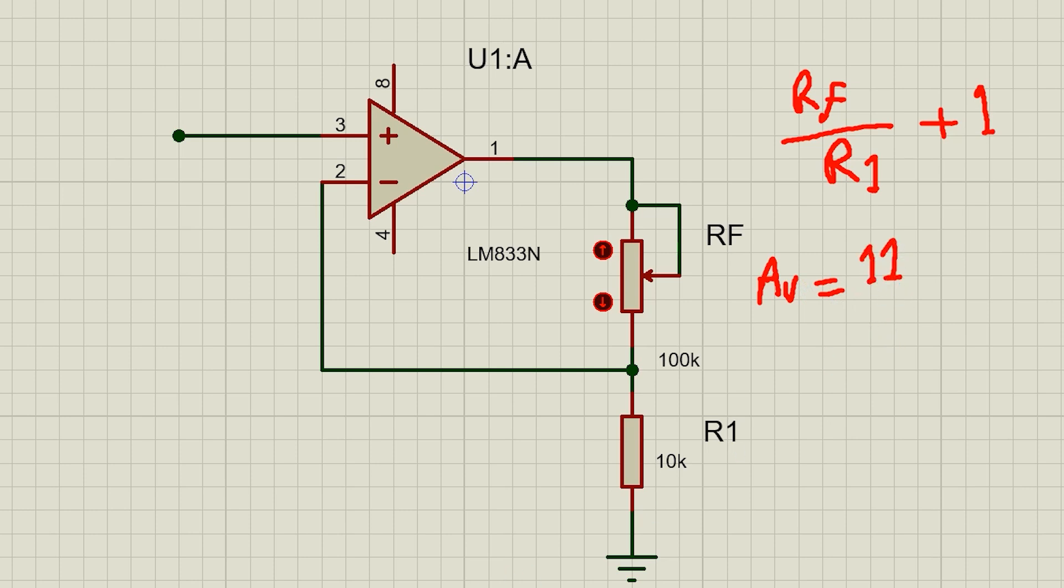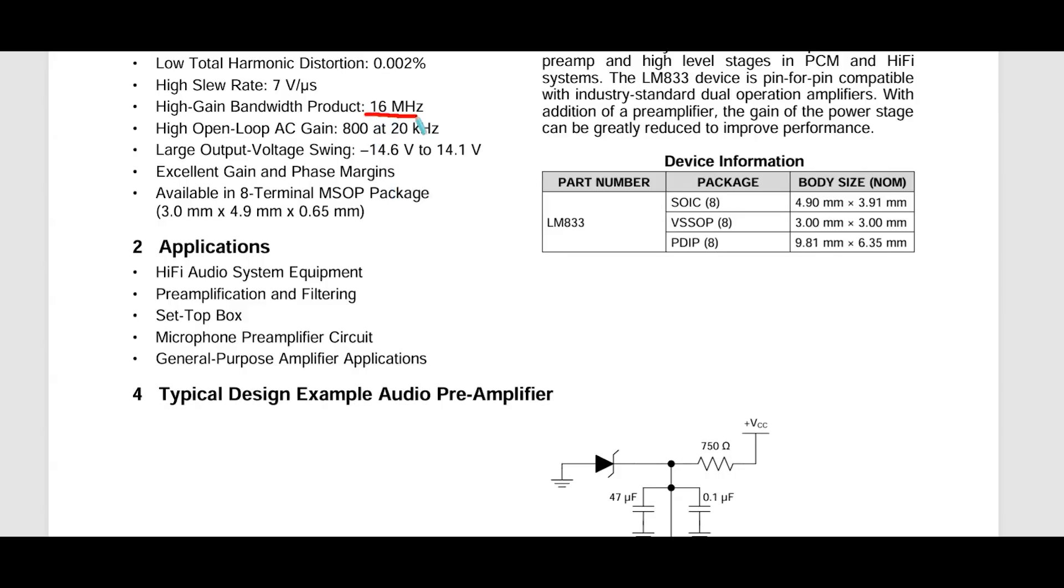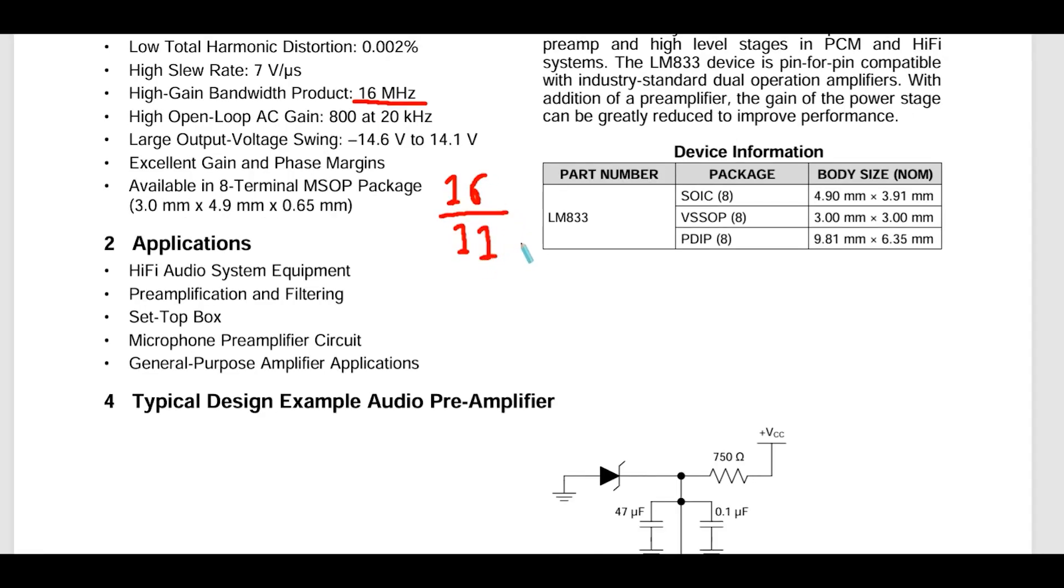But here's the question - will the gain still be 11 at higher frequencies? If we divide the bandwidth specified in the datasheet by the gain, we get the actual bandwidth of the amplifier. That gives us around 1 MHz.